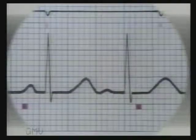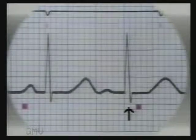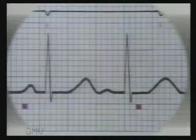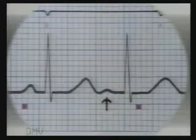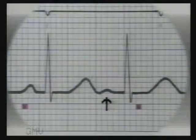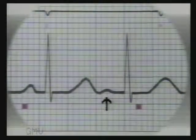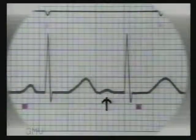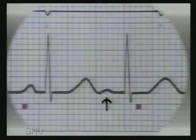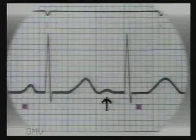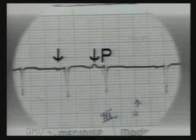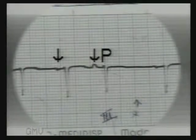When the QRS complex of the premature beat has normal configuration, the beat is supraventricular. Its site of origin can be determined by studying the P-wave. In this premature beat, the P-wave is similar but slightly different from the other sinus beats — this is an atrial premature beat. Note the upright P-wave, slightly altered, in an atrial premature beat, with a normal PR interval. In this ECG, the premature beat shows an altered P-wave different from the regular sinus P-waves, so this is an atrial premature beat.